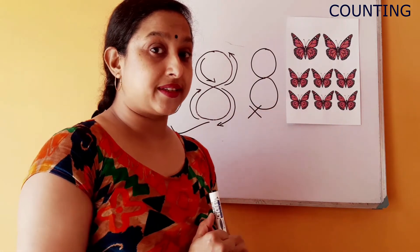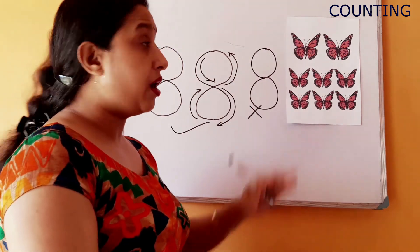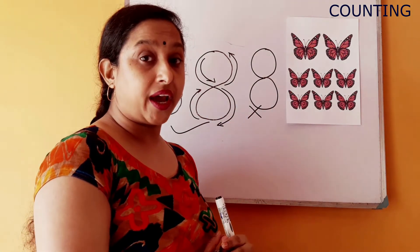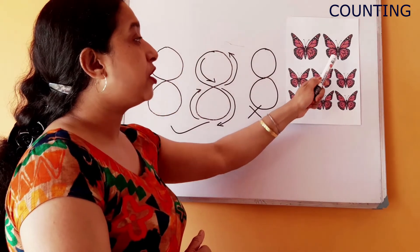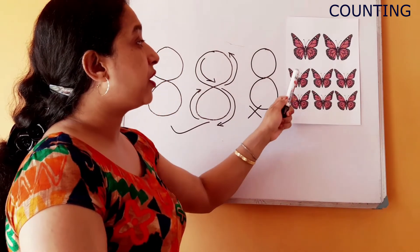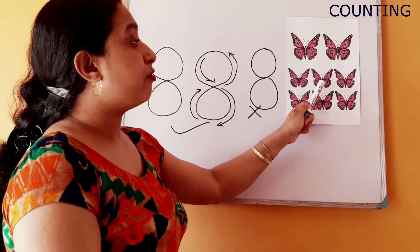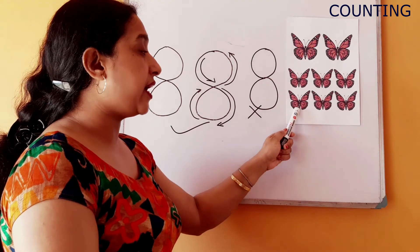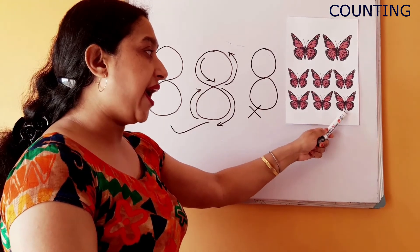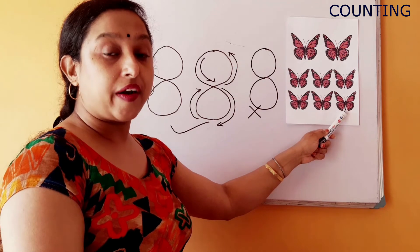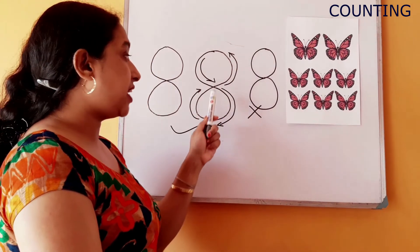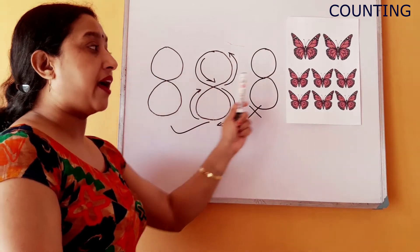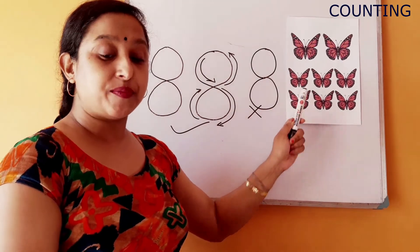Now here you can see colorful butterflies. So let's count together how many butterflies are there: one, two, three, four, five, six, seven, eight. There are eight butterflies. This is number eight — eight, and there are eight butterflies.